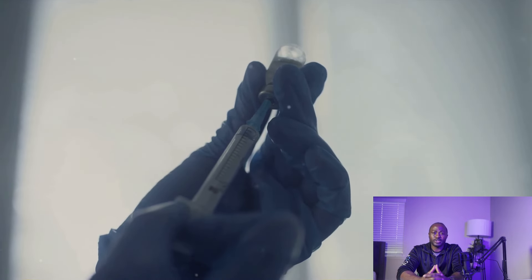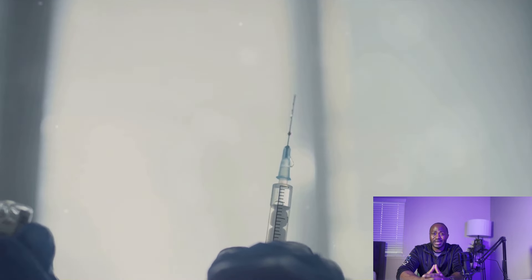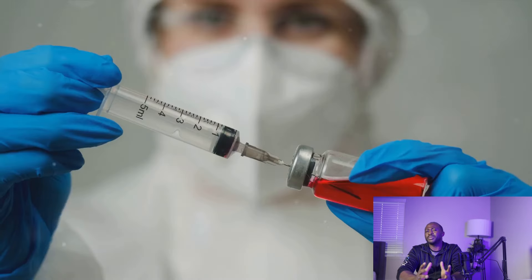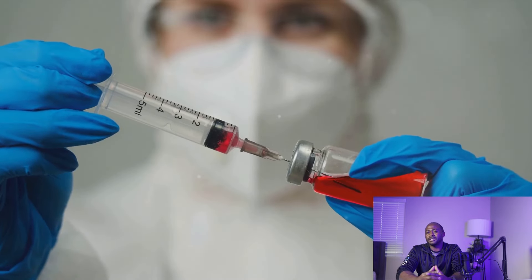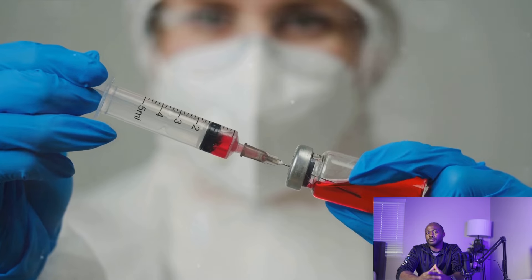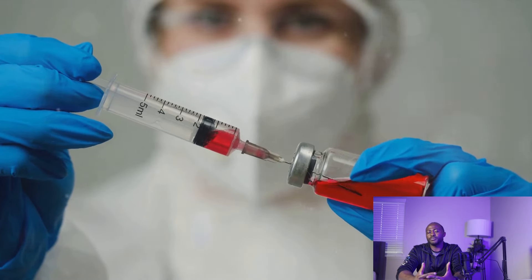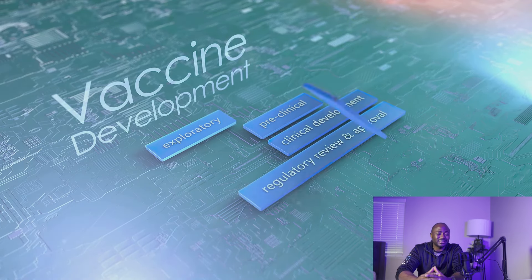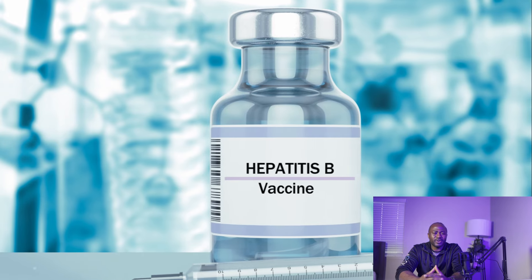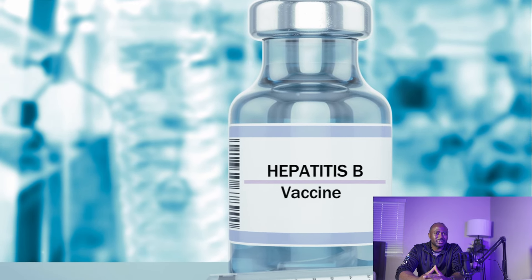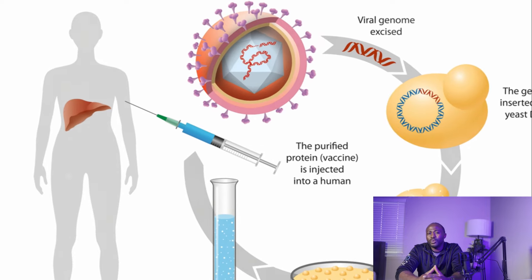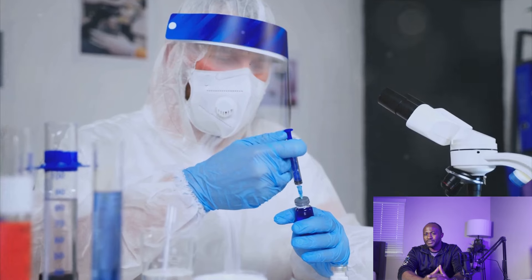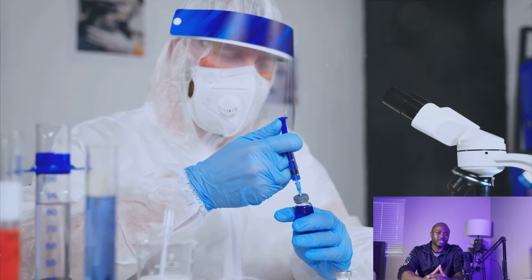Then there are subunit, recombinant, and conjugate vaccines. These use specific pieces of the germ, like its protein, to stimulate an immune response. Hepatitis B and HPV vaccines are examples. They offer a strong, targeted response with fewer side effects, but like inactivated vaccines, may require booster shots.